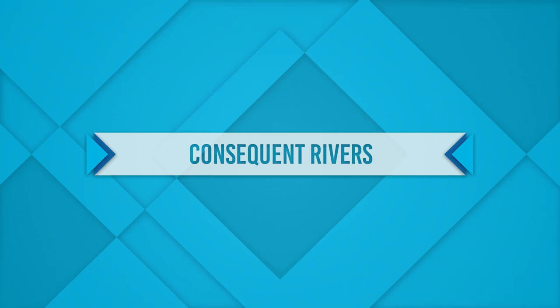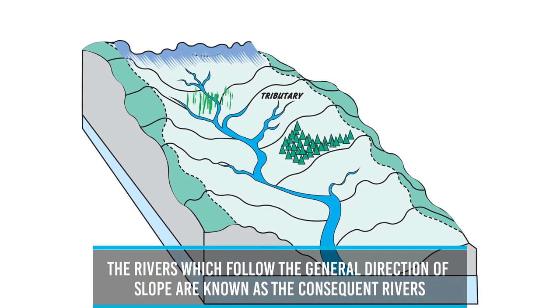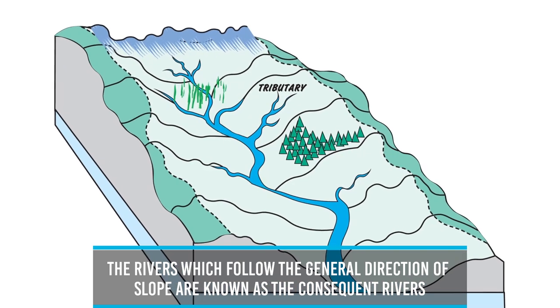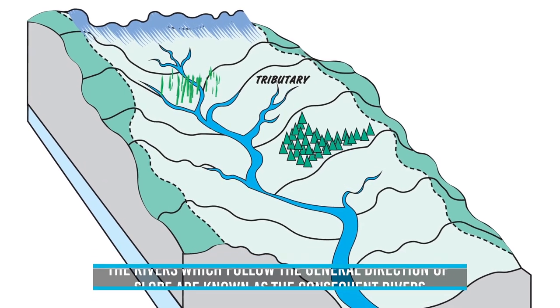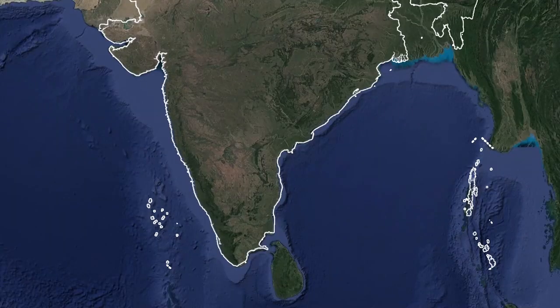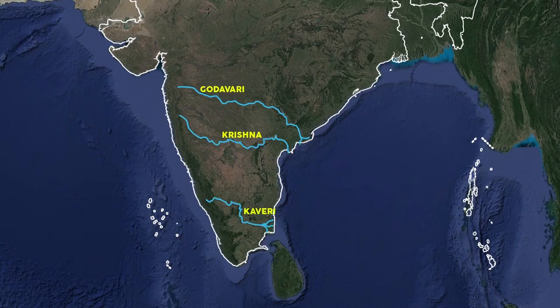Consequent Rivers: The rivers which flow in the general direction of the slope are known as Consequent Rivers. Most of the rivers of Peninsular India are consequent rivers. For example, rivers like Godavari, Krishna, and Kaveri descending from the Western Ghats and flowing into the Bay of Bengal are some of the consequent rivers of Peninsular India.